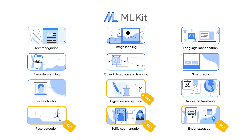ML Kit brings the best of Google's models to a simple-to-use API that gives you a turnkey solution for common problems like language translation, face detection, smart reply, and a whole lot more. This year, we've released four new models: pose detection, digital ink recognition, selfie segmentation, and entity extraction — and they work natively on both Android and iOS.